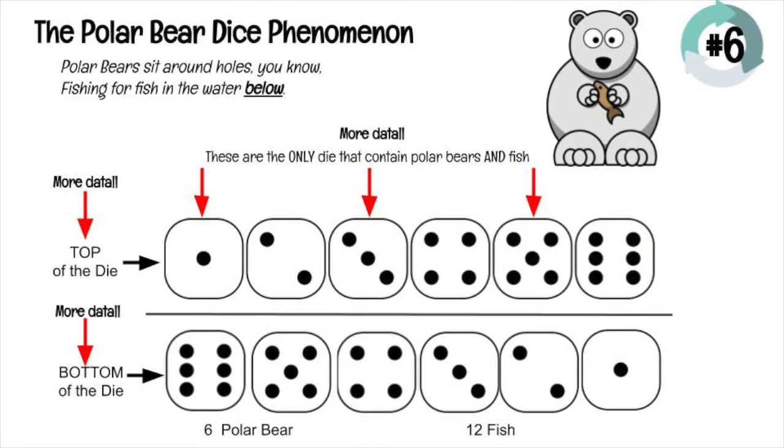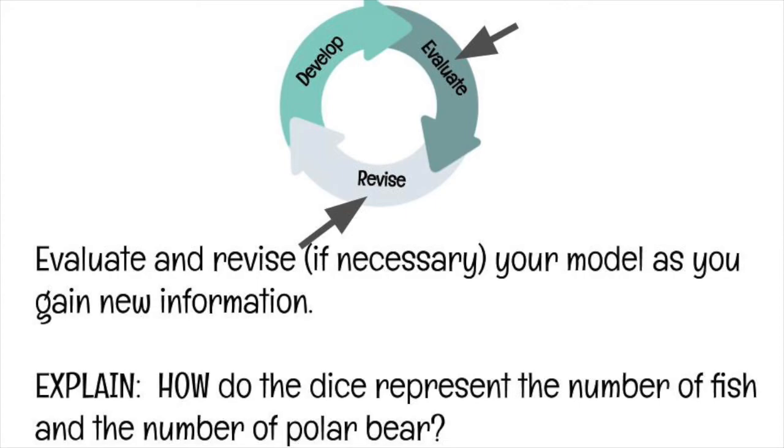This time I'm going to reveal a big piece of information. And that is that both sides of the dice matter. The top of the die represents something, polar bears or fish. And the bottom of the die represents something too, polar bears or fish. In our example, we have six polar bears and 12 fish. And the red arrows show us that the only dice that can possibly have polar bears are the ones on the top that have dots in the center. We're getting ready to reveal the solution, but revise your model. See if you can have your model represent the polar bear and have your model represent the fish.